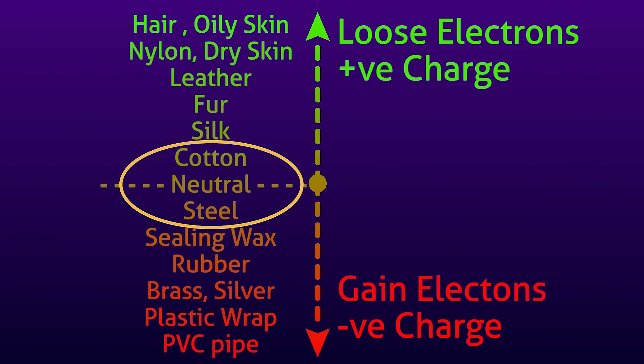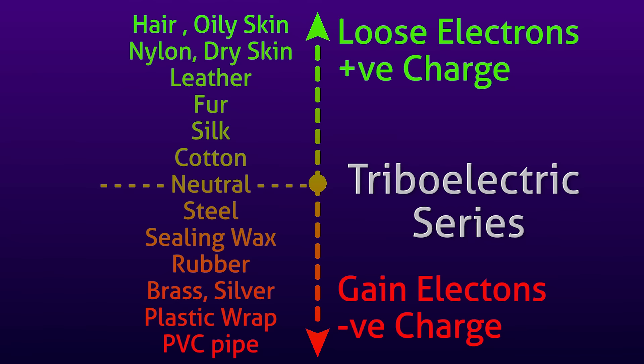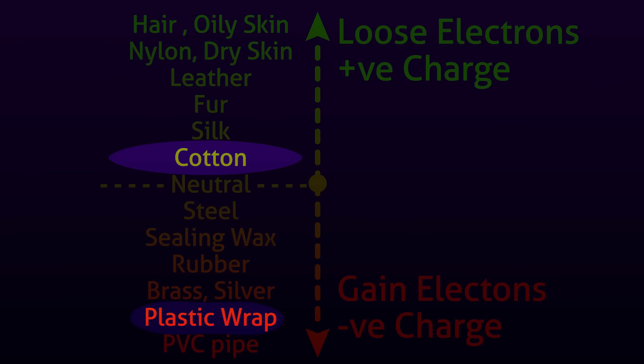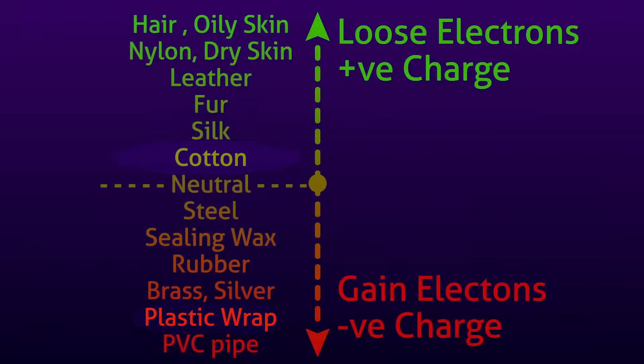Select two materials wide apart in this list, rub them together and you have static charge developed. This list is in fact called triboelectric series. From this list, we can easily make out combinations where magic can be performed. Plastic rod versus hair, plastic wrap versus cotton and so on.